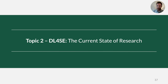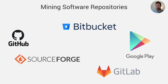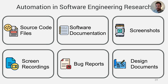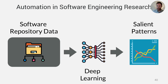This brings us to the next topic: the current state of research in deep learning for software engineering. Researchers are motivated to apply deep learning to SE tasks because software engineering researchers are fortunate to have large sets of open, incredibly rich data sources — open source repositories like GitHub, GitLab, SourceForge, Bitbucket, and Google Play — which include many types of artifacts from which we can learn patterns, generate predictions, and create automated tools.